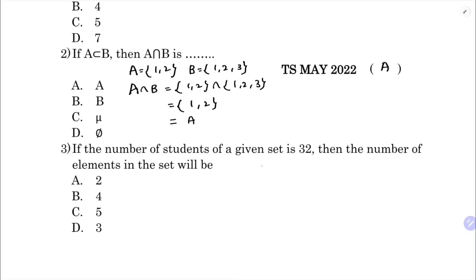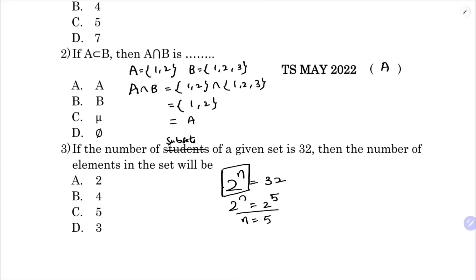Third question: if the number of subsets of a given set is 32, find the number of elements. The formula for number of subsets is 2 power n equals 32. So 2 power n equals 2 power 5, therefore n equals 5. The number of elements in the set is 5, so the correct option is C.